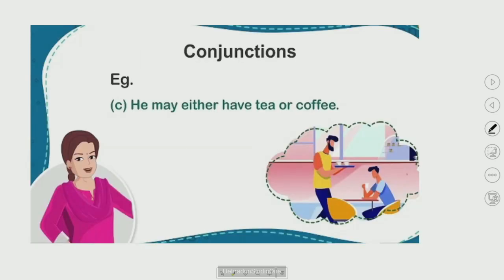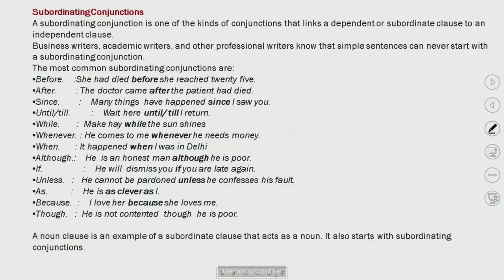We already studied this in detail; now we have a quick revision of subordinating conjunctions. Subordinating conjunctions are given here — we use them as conjunctions that link a dependent or subordinate clause to an independent clause. In both of them, we use subordinating conjunctions.